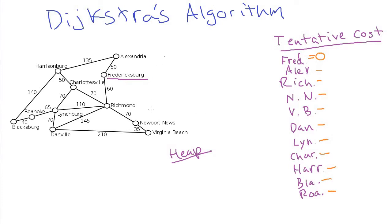We also keep track of a min heap storing the cities we have yet to visit. We use a heap because we want to constantly get out the next city in order of smallest cost first. This makes Dijkstra's algorithm take fewer iterations if we consider the most promising paths first. In the beginning, we put Fredericksburg onto the heap with a tentative cost of zero, and we dequeue it to set it as our current city.